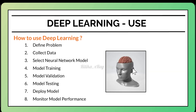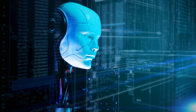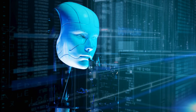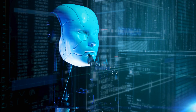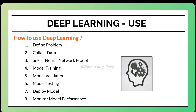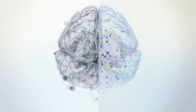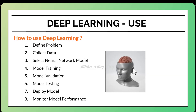To use deep learning, first define the problem clearly — state what you want to solve and check if deep learning is suitable. Then gather and prepare data for training the model. Once data collection is complete and the problem is confirmed suitable for deep learning, choose the appropriate model and begin training.